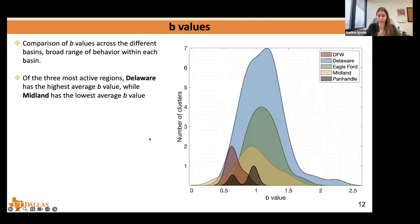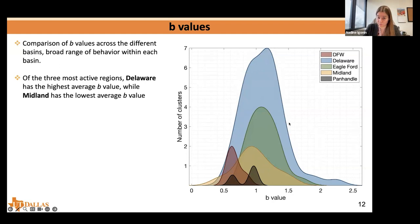We calculated B-values for all 527 clusters, or as many as we could. The means tend to be around 1, which is good, but there is some spread. In the Delaware Basin, B-values range from 0.5 to 1.5, spanning the whole range. In general, the Delaware has the highest average B-value, while the Midland Basin has the lowest average B-value of the three largest basins.